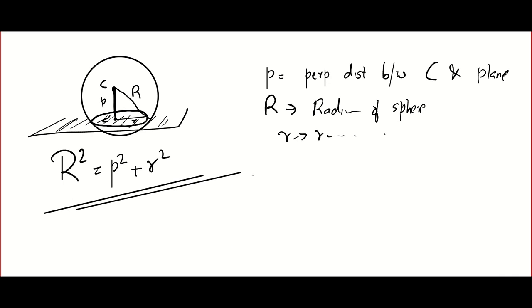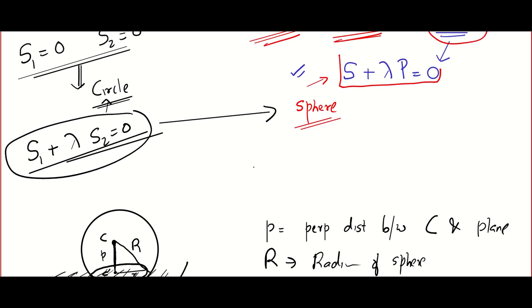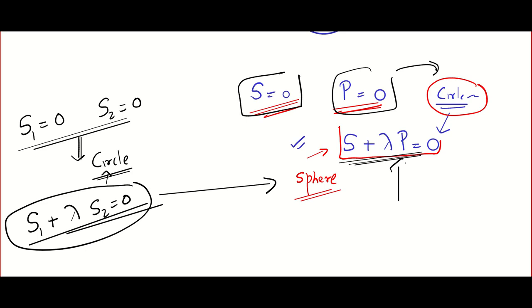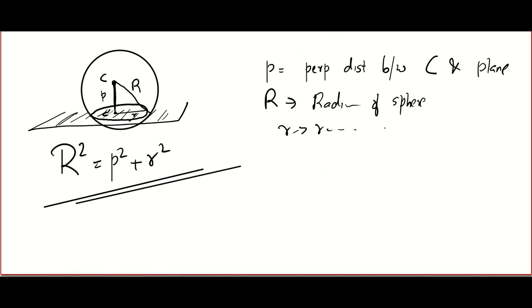By the Pythagorean theorem: R² = p² + r². So remember this is the intersection condition. Capital R is the radius of the sphere, small r is the radius of the circle, and p is the perpendicular distance from the center of the sphere to the plane. In the next video when we do problems related to this, you will understand how important this concept is.